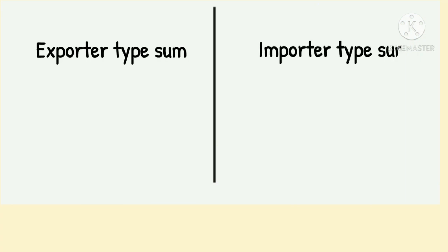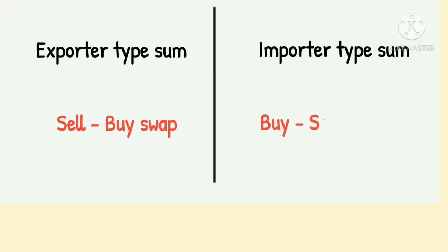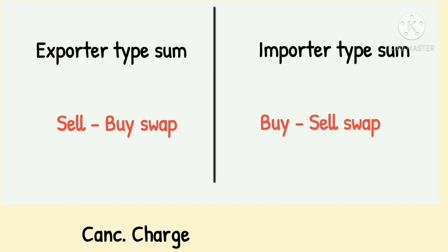In an exam, we need a simple trick to solve sums easily. For exporter type sums, remember sell-buy swap — that is, the bank will sell spot and buy forward, and the difference between the two shall be swap loss. For importer type sums, remember buy-sell swap — that is, the bank will buy spot and sell forward.